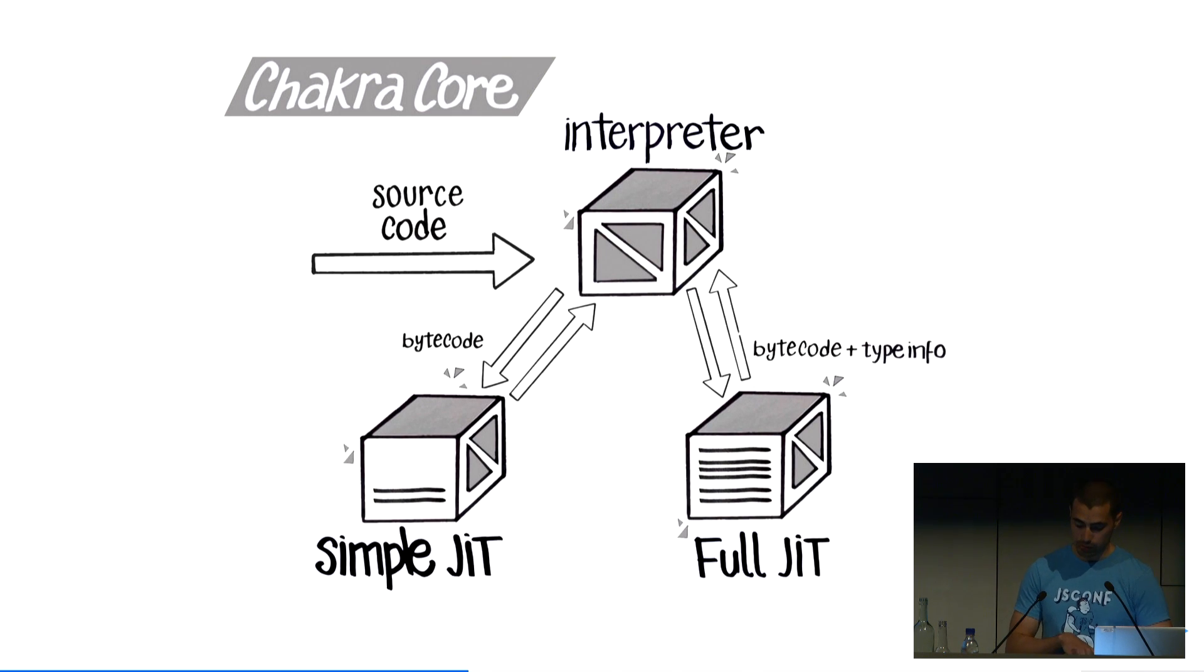In the case of ChakraCore, it shares a similar architecture to SpiderMonkey. It has an interpreter, an unoptimizing compiler, which is a simple JIT, and an optimizing compiler, full JIT. The interesting part about ChakraCore is that it can find additional threads to compile or to run the garbage collection. Imagine that you're running the engine on a four-core CPU. In theory, you could take advantage of that and compile, parallelize the JIT compilation in three of those cores.